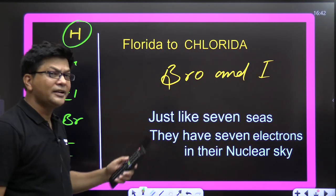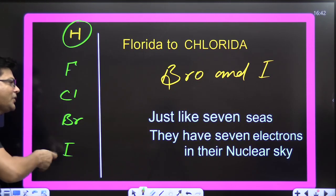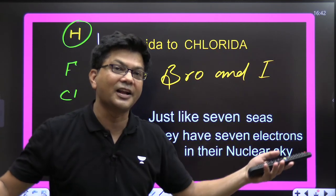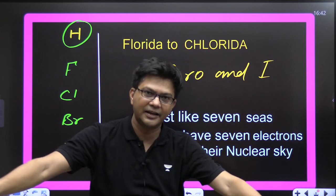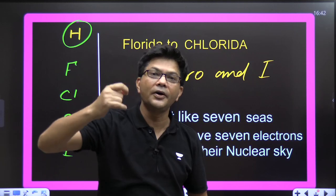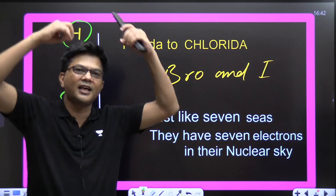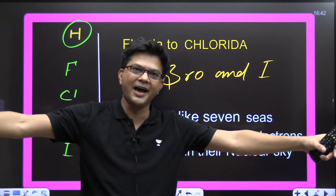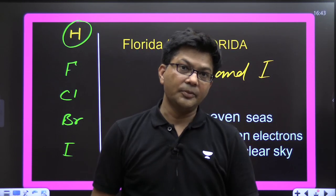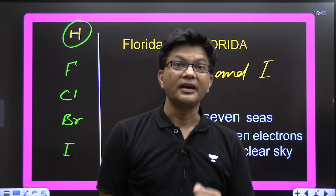Now halogens: Florida to Florida — Bro and I! Just like seven seas, they have seven electrons in their valence shell. Once again: Florida to Florida, Bro and I — just like seven seas, there are seven electrons in their nuclear sky. Fluorine, Chlorine, Bromine, Iodine.